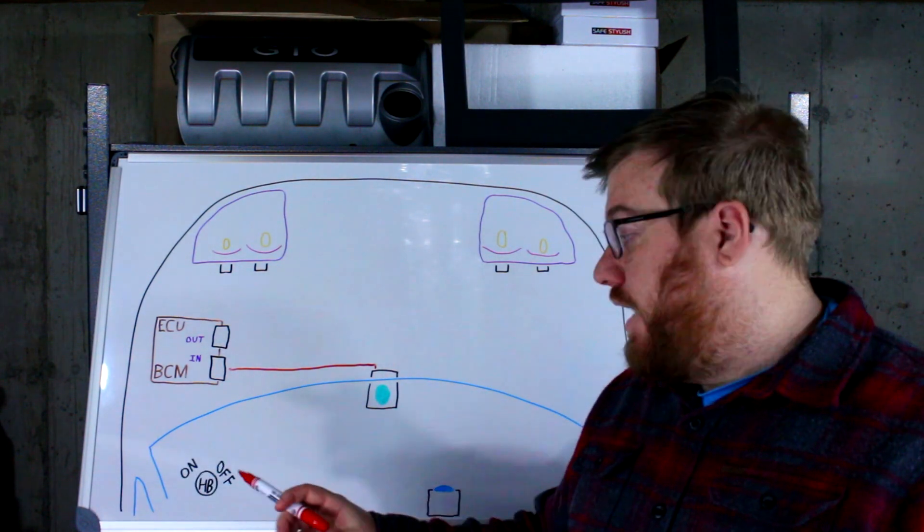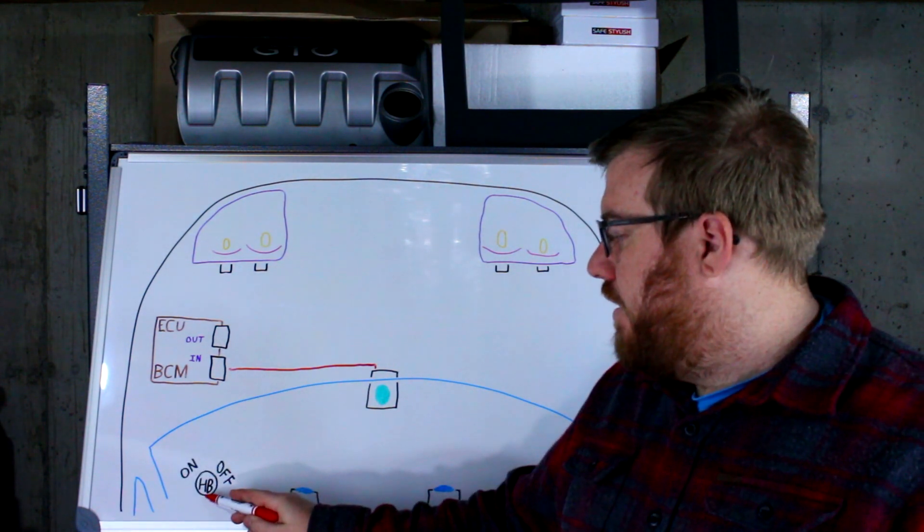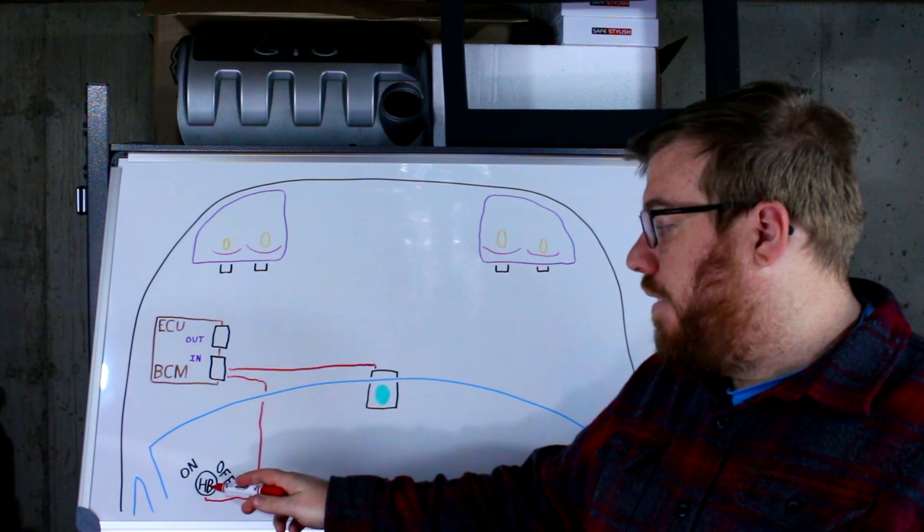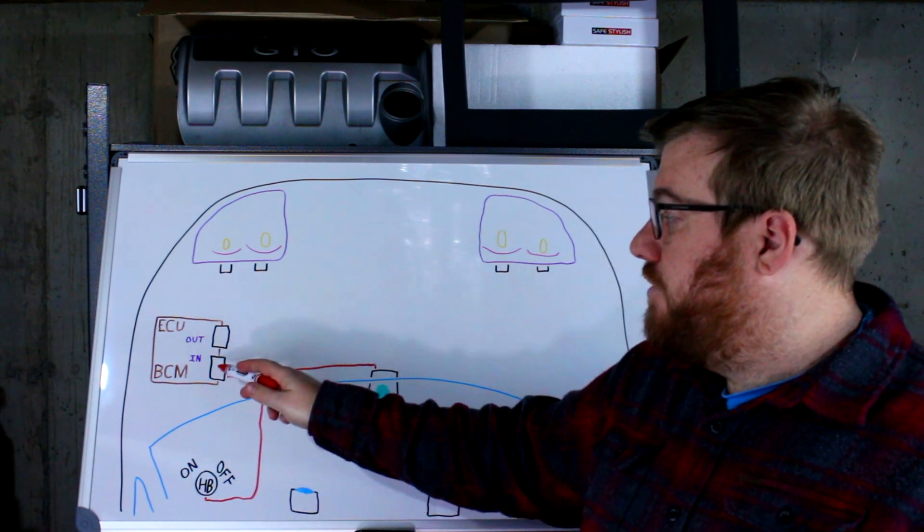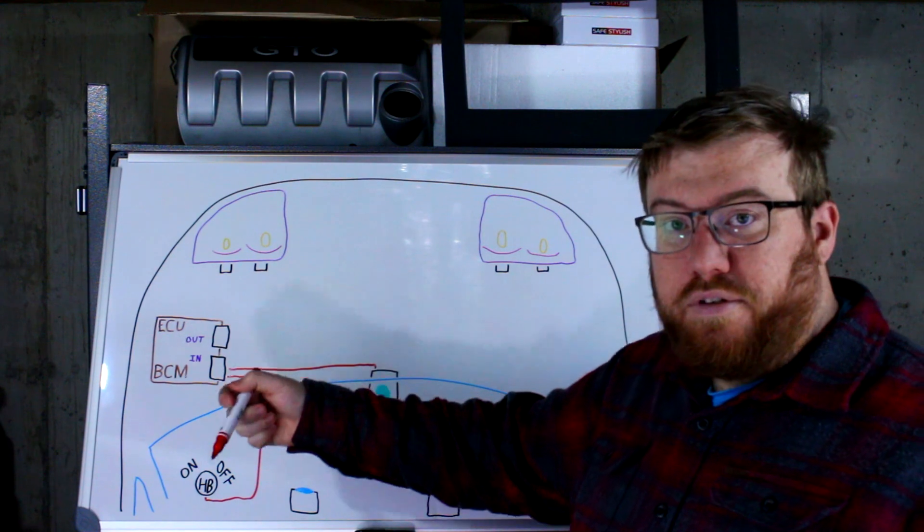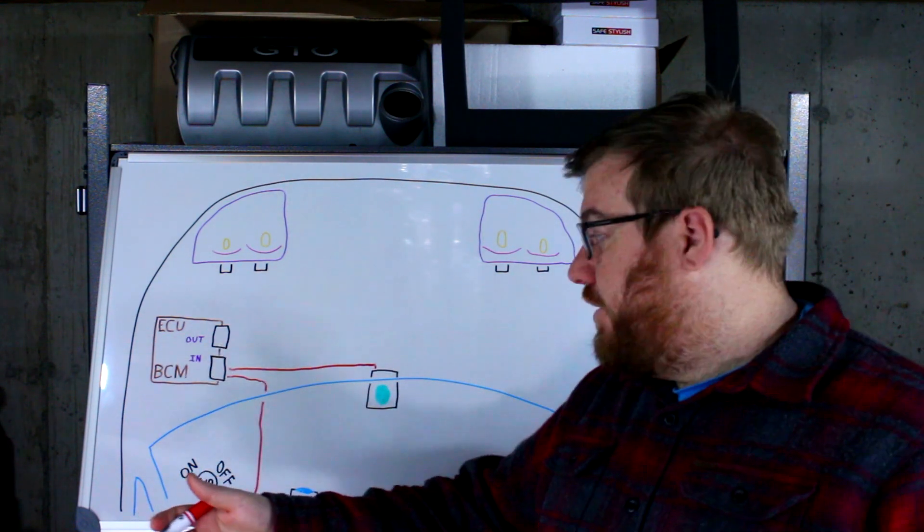So the driver already has the headlights on and is going to switch these high beams on. We're going to send a signal from this switch to the ECU saying, hey, I want those high beams on. Is it okay if I turn them on?